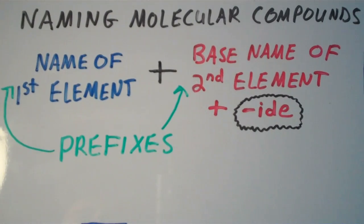So to name a molecular compound, you have the name of the first element, followed by the base name of the second element, plus the suffix -ide. And in front of the names of each element you have prefixes.